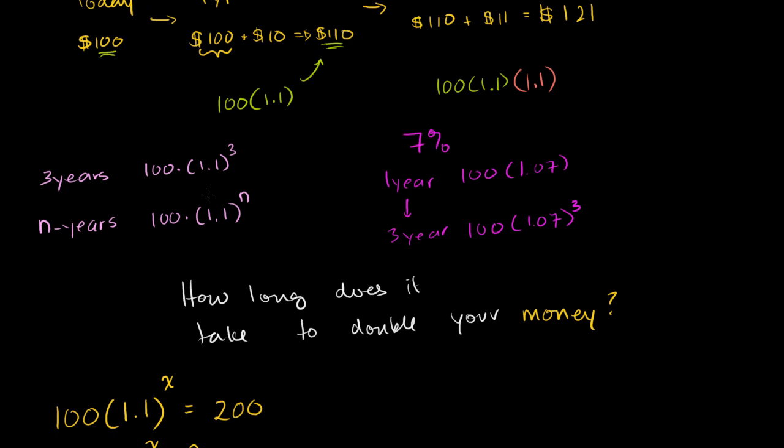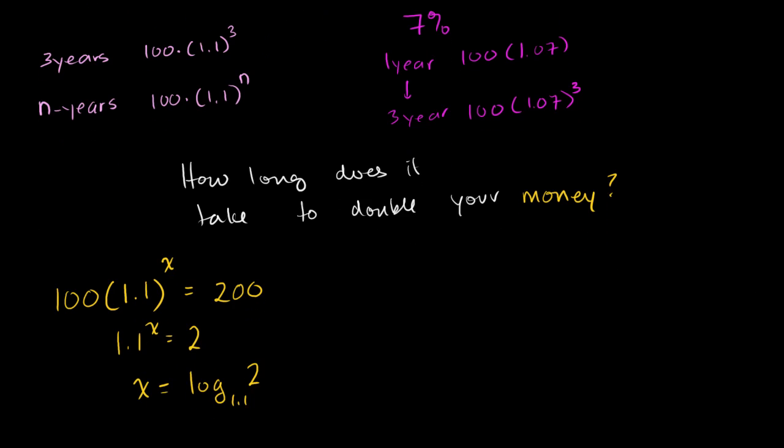If you have a reasonable calculator you can solve for some of these things if you know how to do it, but it's nearly impossible to actually do it in your head. For example, at the end of the last video, we said if I have $100 and if I'm compounding at 10% a year, how long does it take for me to double my money and end up with this equation?